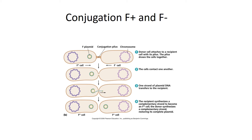So at the end of conjugation between an F-plus and an F-minus bacterium, both bacteria are now F-plus because they both now have the F, or fertility plasmid.